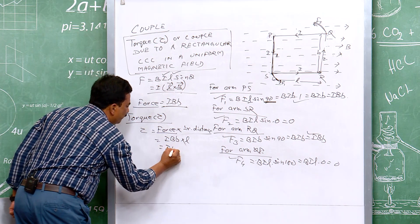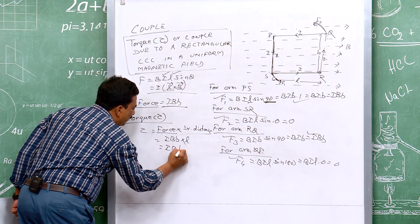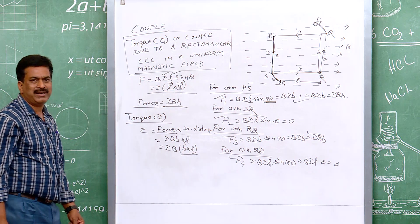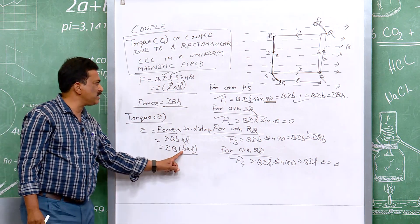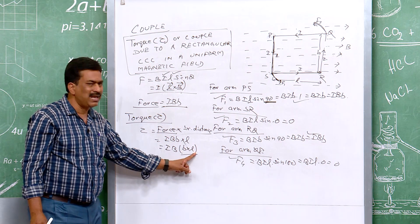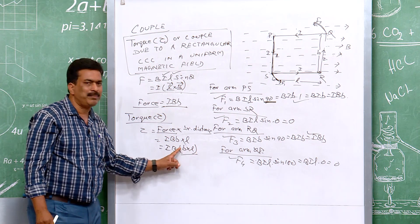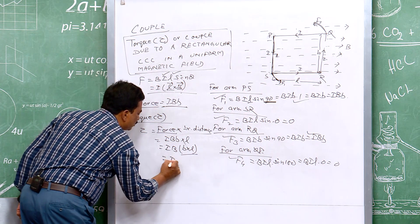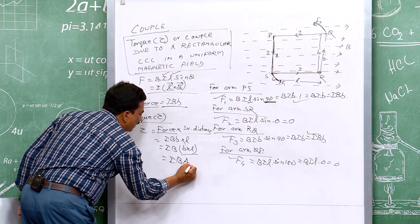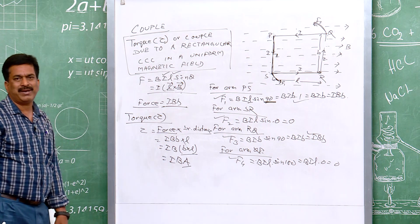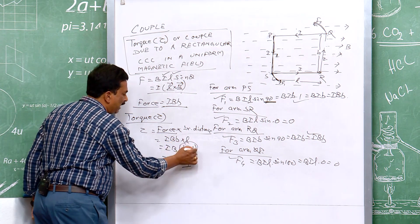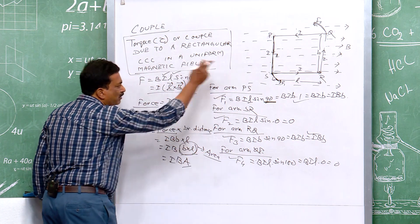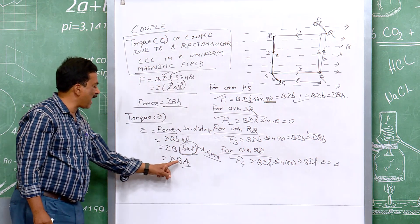So torque = IBb × L. Here B is the breadth and L is the length, so length × breadth equals the area A. Therefore torque = IBA, where A is the area of the coil.